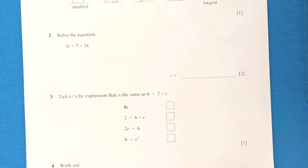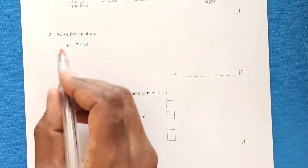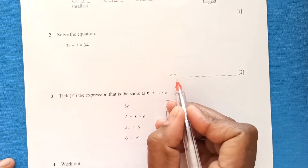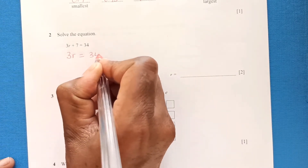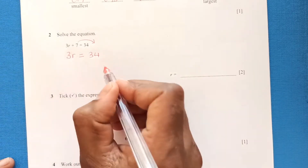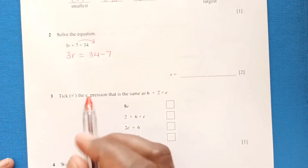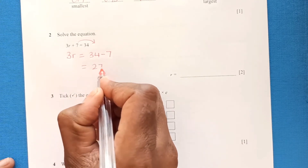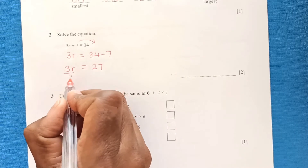Question two: solve the equation 3r + 7 = 34. We need the value of r. So 3r = 34 − 7. Shift the 7 to the other side; since it is positive it becomes negative, so 34 minus 7 is 27.